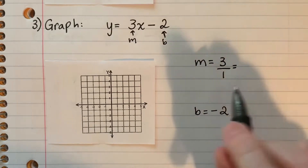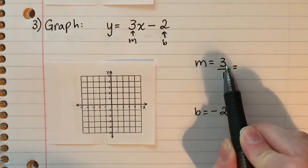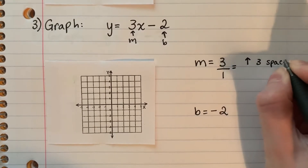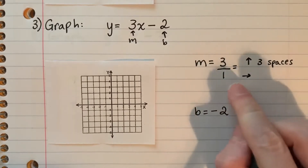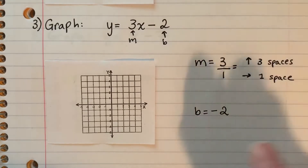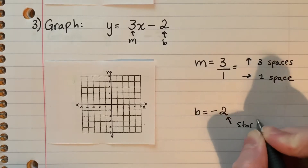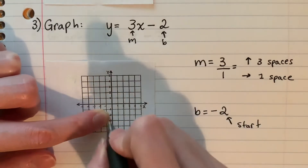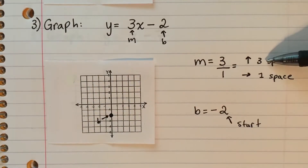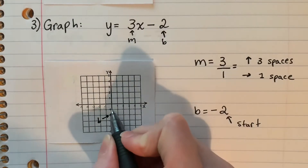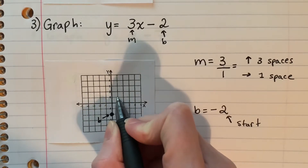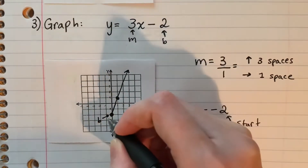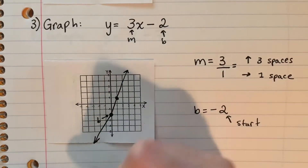So my rise is three — it's positive, which means up — so I go up three spaces. The denominator one is always to the right, one space. My y-intercept is negative two, so I find negative two on the y-axis and put a big point. Then I go three up and one to the right and make a line.